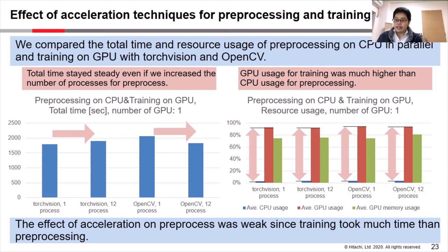We can explain why this trend happens when we observe the resource usage in the right figure. It indicates the resource usage of preprocessing on CPU and training on GPU. As you can see, GPU usage for training was much higher than CPU usage for preprocessing. Thus, the effect of acceleration on preprocessing was weak since training took much more time than preprocessing.